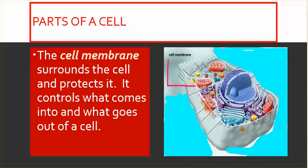Parts of a Cell. The cell membrane surrounds the cell and protects it. It controls what comes into and what goes out of a cell.